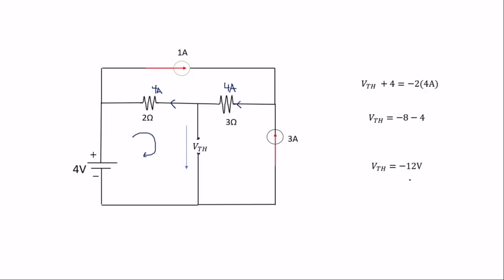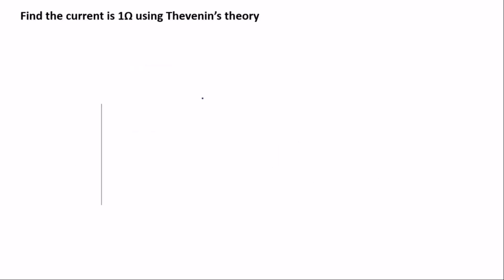The next step is to find the Thevenin resistance, which is the same as finding the equivalent resistance. Note: when finding the Thevenin resistance, if it is a current source it becomes an open circuit, and if it is a voltage source it becomes a closed circuit — a short circuit.